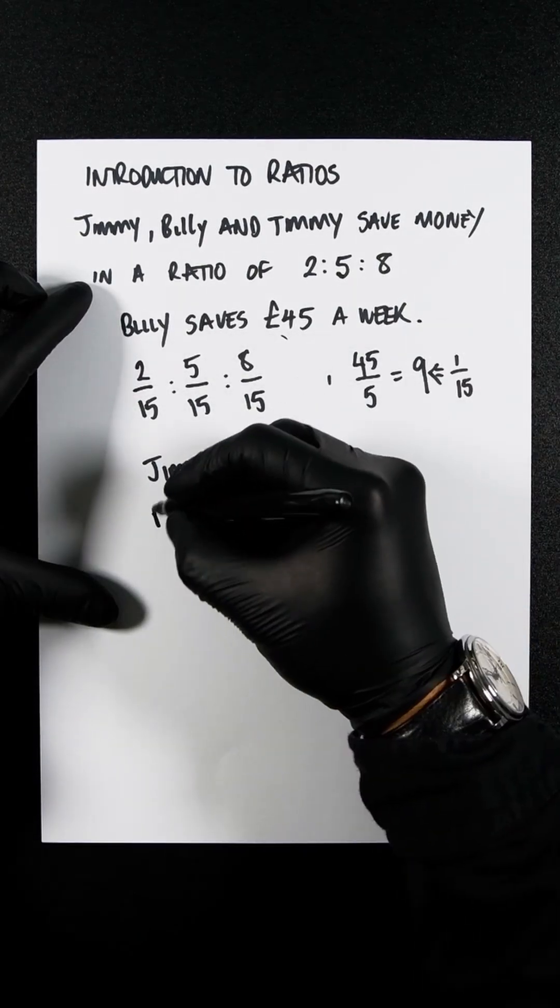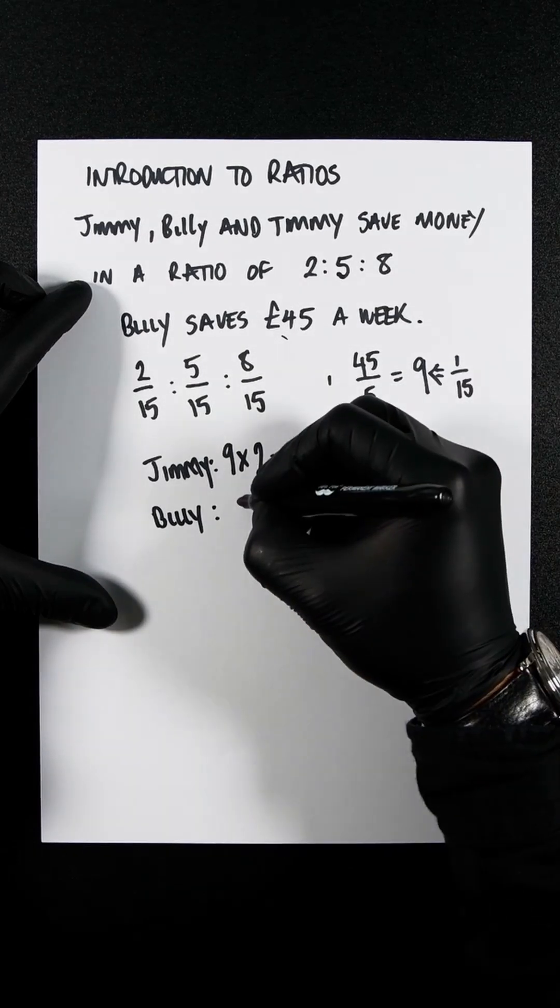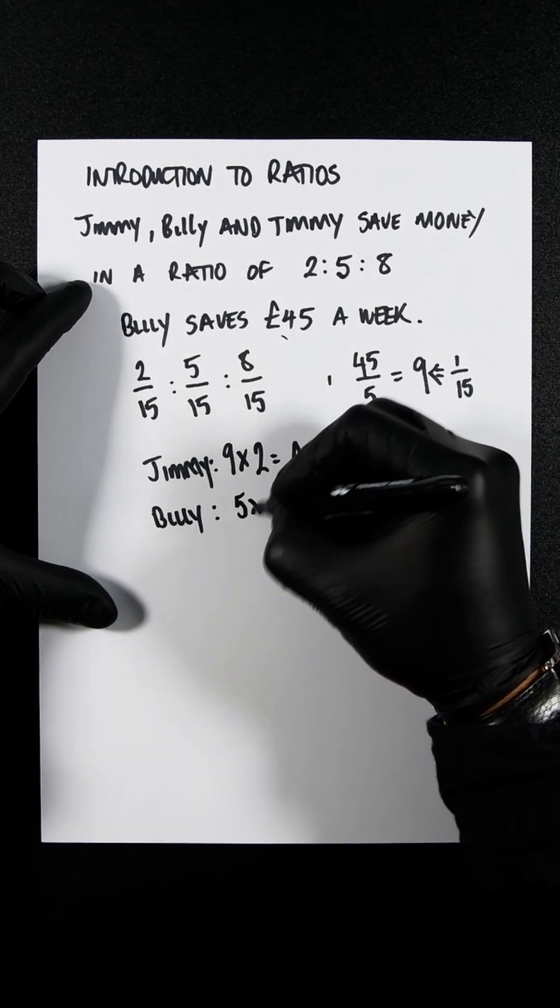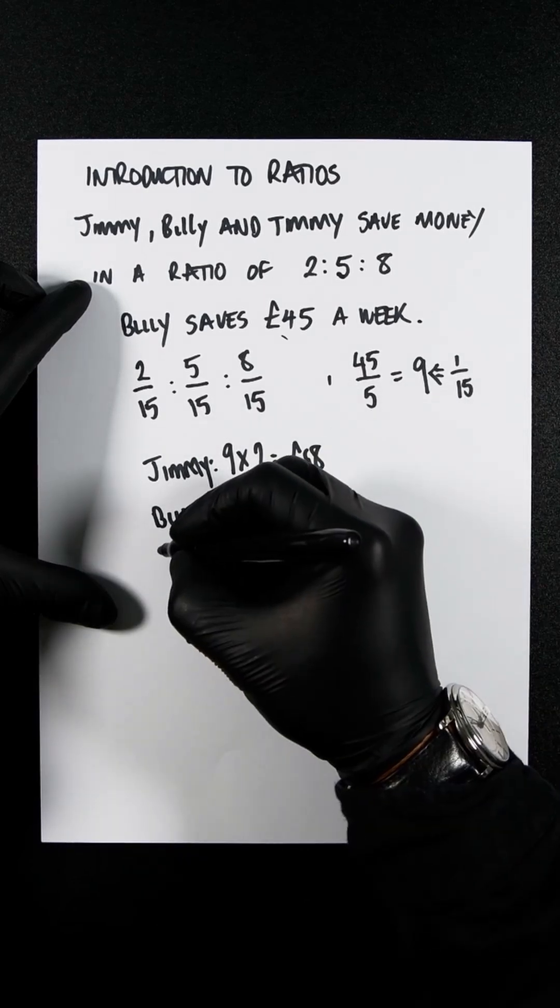Obviously we know Billy. He's a bad boy. He's getting, what is it, 5 times 9, which is going to be 45 pounds.